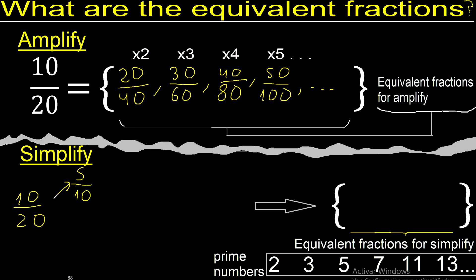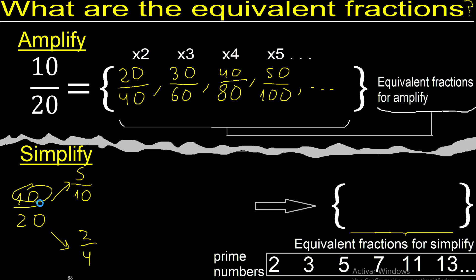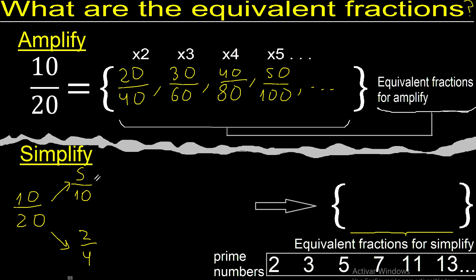10 and 20 can also be divided by 5: 10 divided by 5 is 2, 20 divided by 5 is 4. 10 and 20 cannot be divided by another number here.